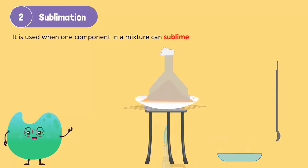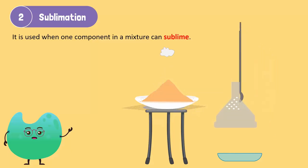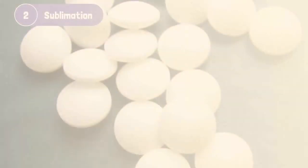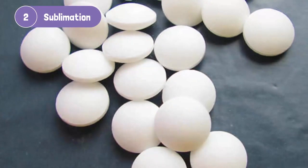Stop heating when the white fumes stop rising and allow the funnel to cool. After cooling, remove the funnel from the china dish and, using a spatula, transfer the solid naphthalene sticking on the walls of the funnel into a watch glass. The sand will be left in the china dish. These naphthalene balls are more commonly known as mothballs. They are used to prevent the presence of insects.